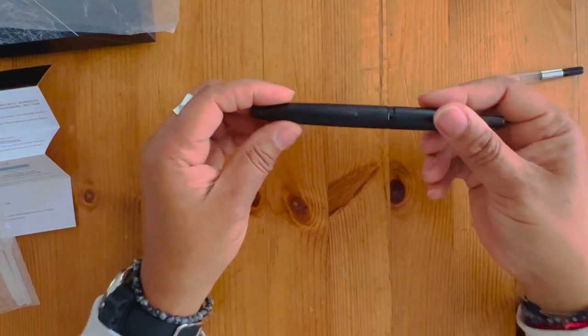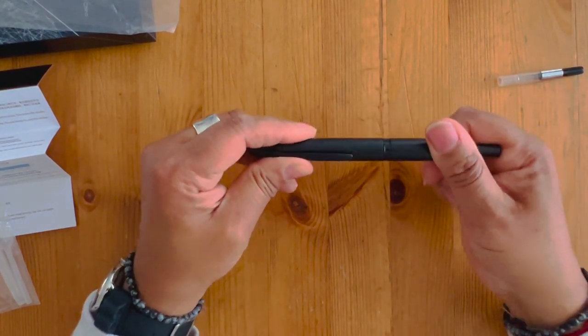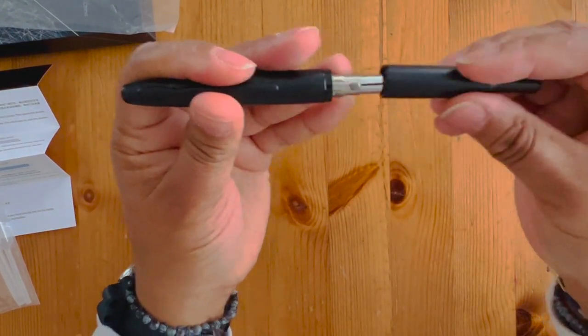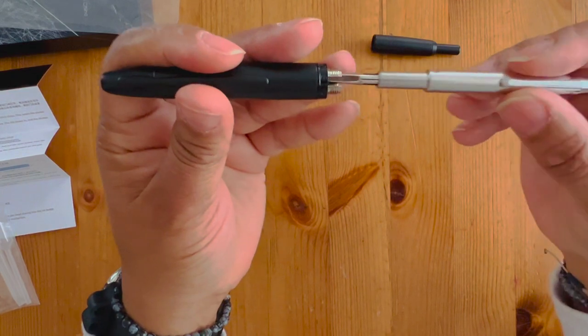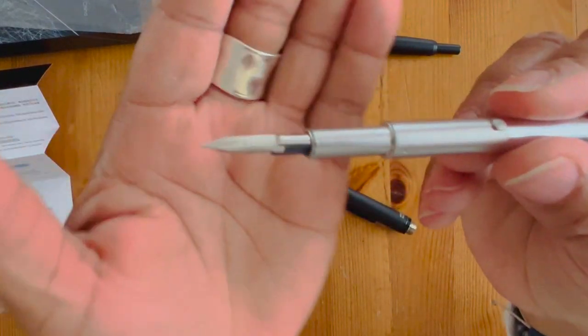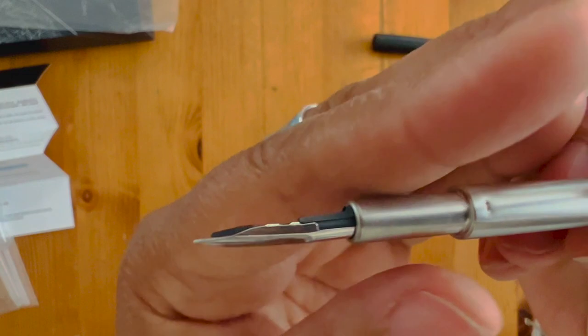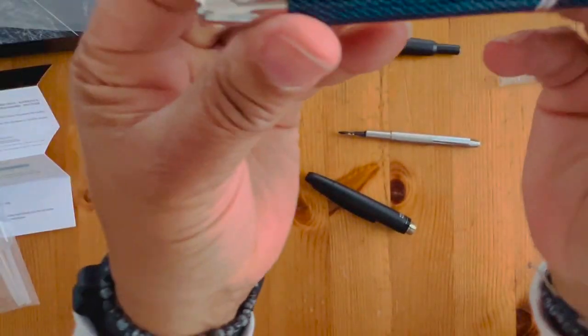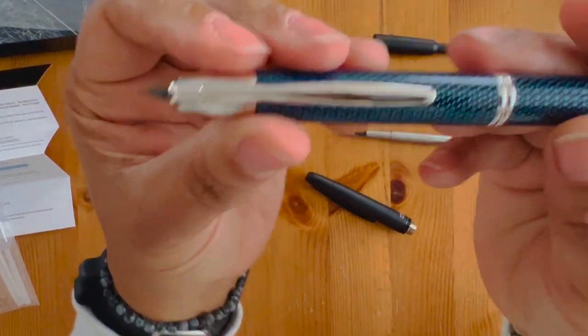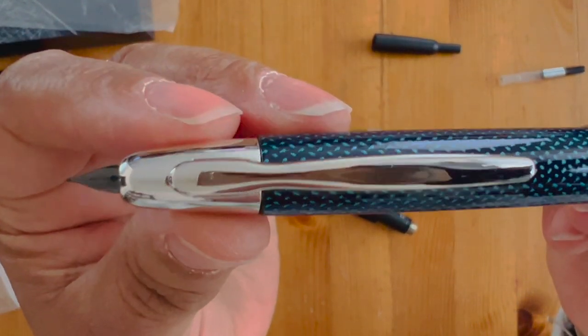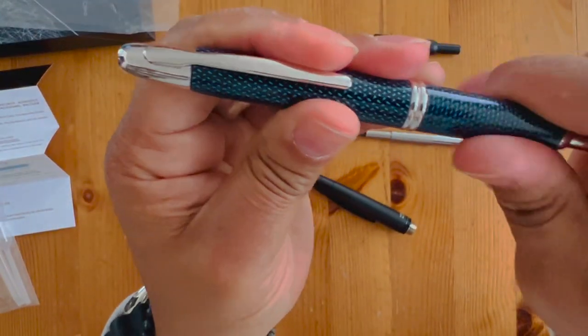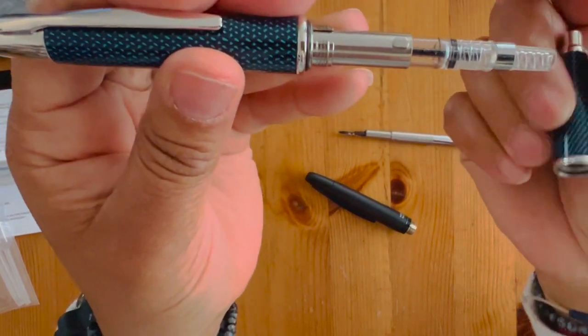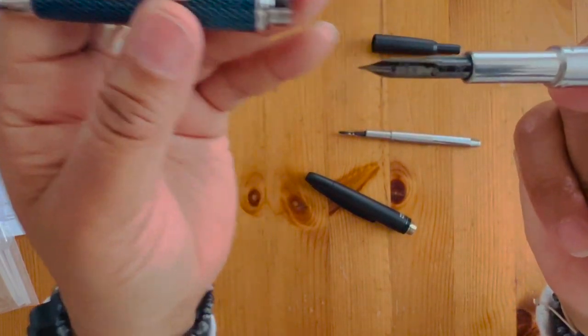To undo this, let's see here, unscrew this here. We have the actual nib unit itself, and this does look exactly like almost like the Pilot Vanishing Point. I switched out my nib here from a fine to an extra fine, but I will unscrew this one and we will see that it's very similar in style except I've got the cartridge converter in this one. Here's the nib unit.